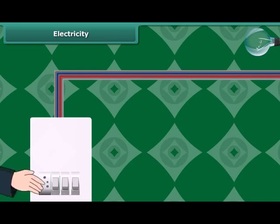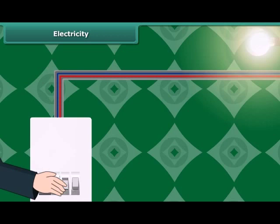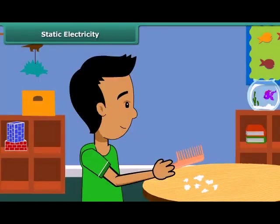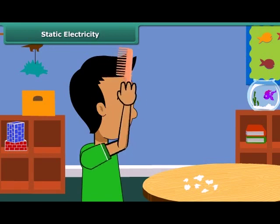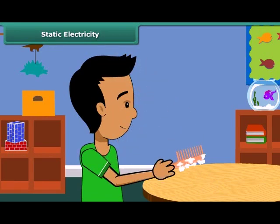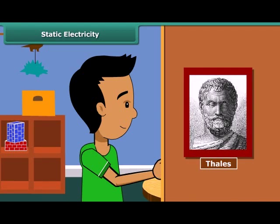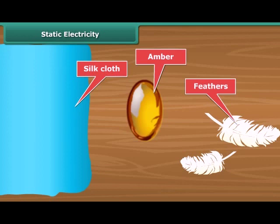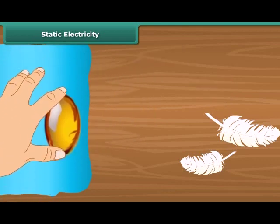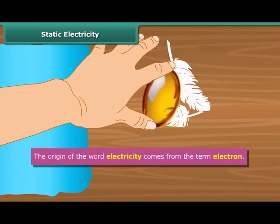When we comb our hair with a plastic comb and take it near small pieces of paper, the paper pieces are attracted toward the comb. We then say that the comb is charged with electricity. This was first noticed by a Greek man named Thales over 2,500 years ago. Thales found that amber attracted tiny feathers after it was rubbed with silk cloth. This was due to static electricity. The origin of the word electricity comes from the term electron.